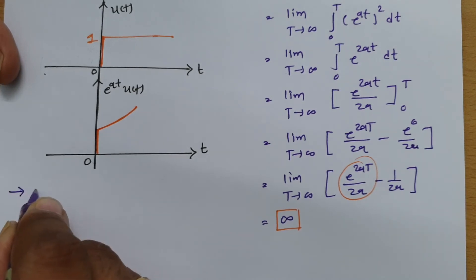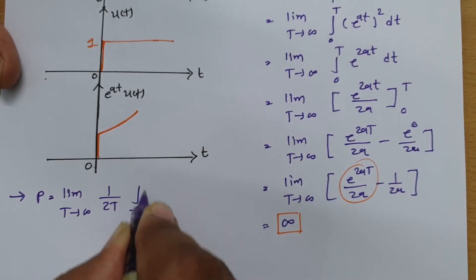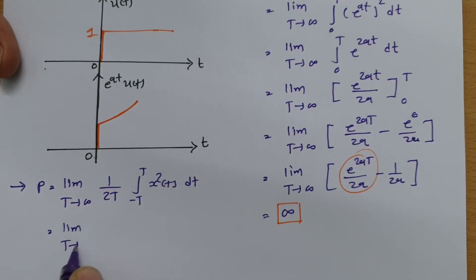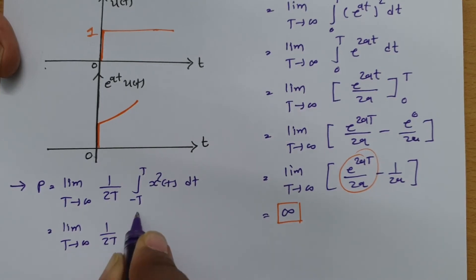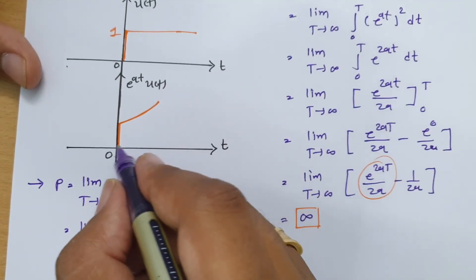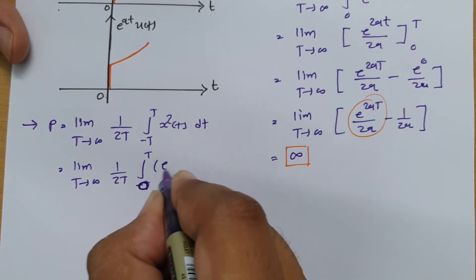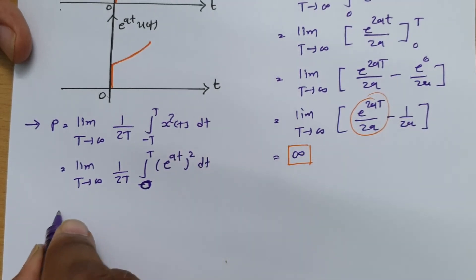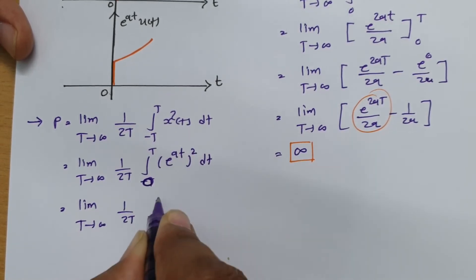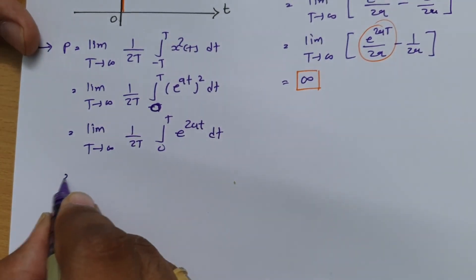We now calculate power using the formula: P = limit as T→∞ of (1/2T) times the integral from −T to T of |x(t)|² dt. Since the signal is zero for negative time and e^(at) for positive time, this becomes: limit as T→∞ of (1/2T) times the integral from 0 to T of e^(2at) dt.